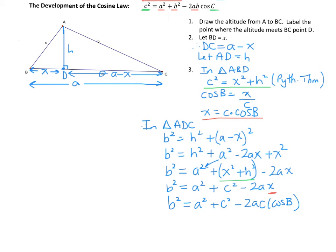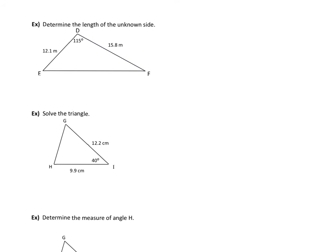Let's work with some examples of how to actually use the cosine law. The unknown side in this example is side D, so I want D squared by itself, and I write the cosine law: D squared equals E squared plus F squared minus 2EF times the cosine of angle D.